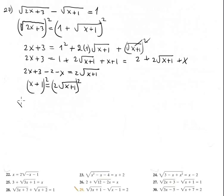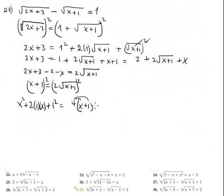Squaring both sides: the left side squared equals 4 times (x plus 1), since squaring 2 gives 4. Applying the distributive property on the right gives 4x plus 4.